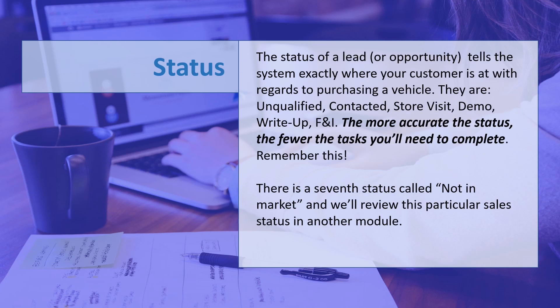The status of a lead or opportunity tells the system exactly where your customer is in regards to purchasing a vehicle. The statuses are: unqualified, contacted, store visit, demo, write-up, and F&I. The more accurate the status, the fewer tasks you'll need to complete. Remember this. There is a seventh status called 'not in market,' and we'll review this particular sales status in another module.